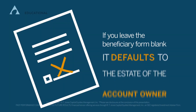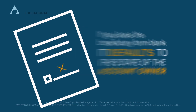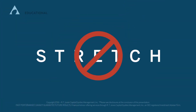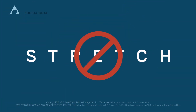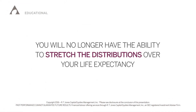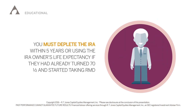What happens if you leave the beneficiary form blank? It defaults to the estate of the account owner, and you are no longer a designated beneficiary according to the IRS. You no longer have the ability to stretch the distributions over your life expectancy. Instead, you must deplete the IRA within five years, or using the IRA owner's life expectancy if they had already turned 70 and a half and started taking RMDs.